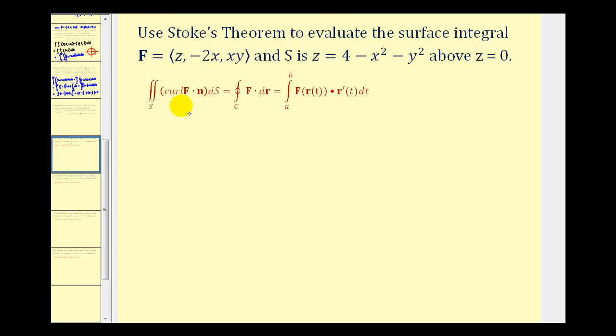In this example, we want to use Stokes' Theorem to evaluate the surface integral of the curl of F dotted with N, integrated with respect to S. And we have the given vector field, and our surface is given by Z equals four minus X squared minus Y squared above Z equals zero.